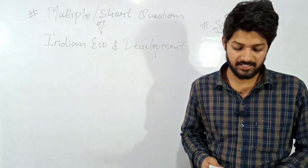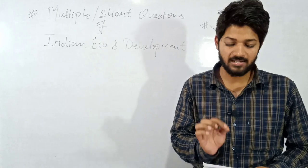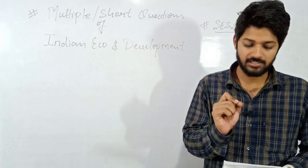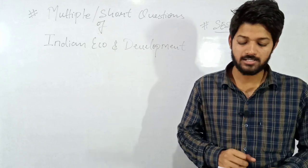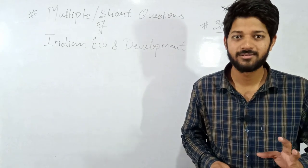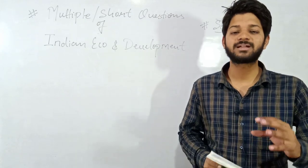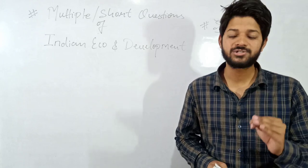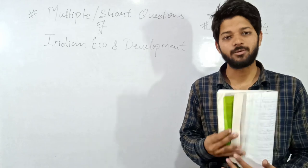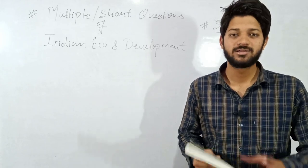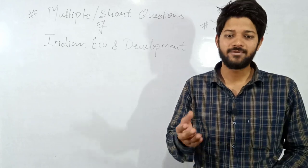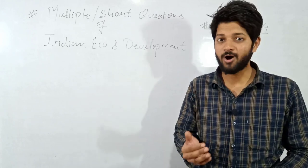The last question, number thirty: India approached dash to manage the economic crisis in 1991. Options: World Bank, IMF, UNO, or both A and B. The answer will be D — both A and B — because India approached both the World Bank and the IMF when the economic crisis came in 1990-91.